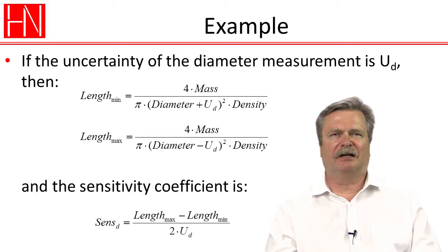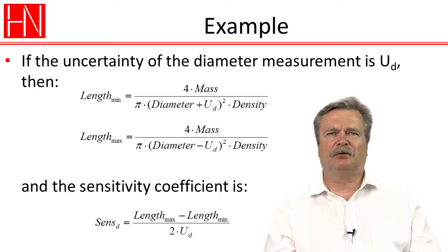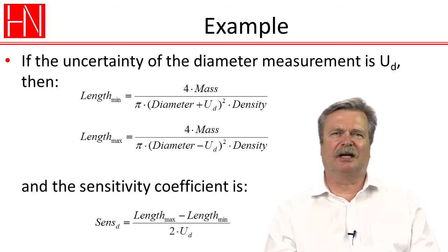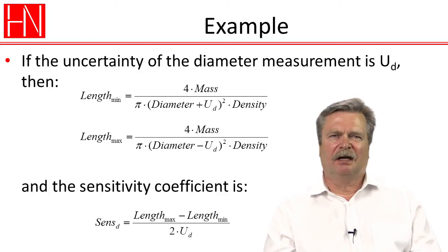And so here we have, for example, for the diameter measurement, we take the diameter and then we add the uncertainty of the diameter measurement to the measured value, and that gives us a minimum length. And then in the next equation, we subtract the uncertainty of the diameter from the value and calculate, and then we get a maximum length. And then from that, we can calculate a sensitivity coefficient, that is the difference in those two lengths divided by two times the uncertainty.